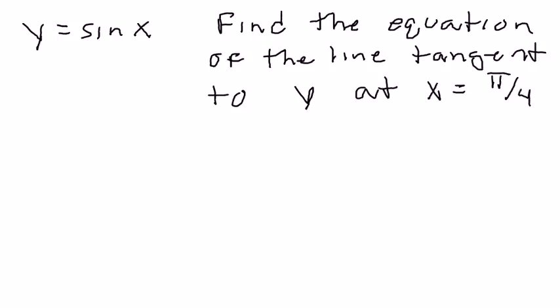First thing I need to do is I need to find the y value when x is pi over 4. y equals the sine of pi over 4, which is square root of 2 over 2 or any version of that. So, the point that it's going to go through when I've used my point slope form in just a moment is going to be pi over 4 square root of 2 over 2.